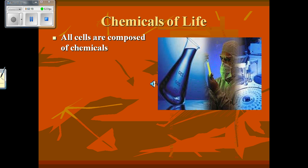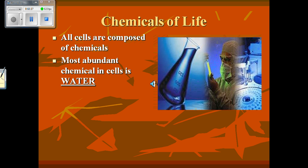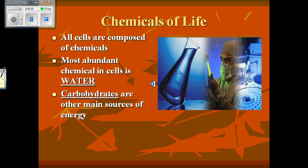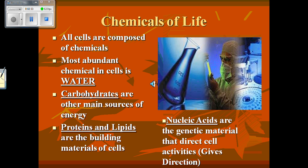All living things are also composed of chemicals. Inside cells of living things there are chemicals. The most abundant chemical in our cells is water. Some other chemicals found in cells include carbohydrates, which are made up of carbon, hydrogen, and oxygen — they're the main source of energy and you get them from your food. Proteins are building blocks that help build and repair parts of cells. Lipids are essentially fats and do similar things to proteins. Nucleic acids are also chemicals — they are the genetic material that directs your cells' activities.